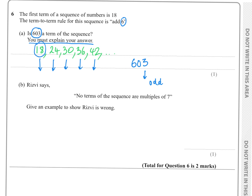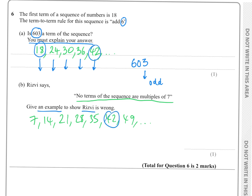Someone says no terms of this sequence are multiples of seven. Multiples of seven are 7, 14, 21, 28, 35, 42, 49... You can use a calculator. Comparing the two lists, 42 stands out straight away — 42 is in both the sequence and the 7 times table. So 42 is the example showing that claim is wrong.